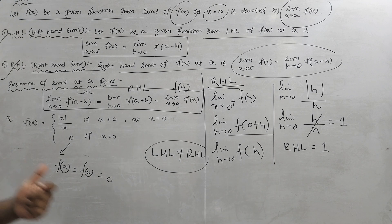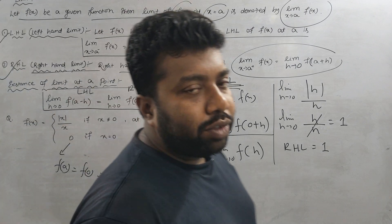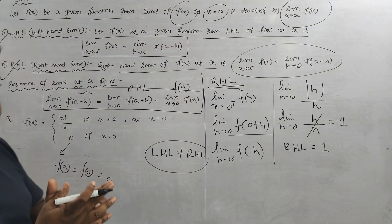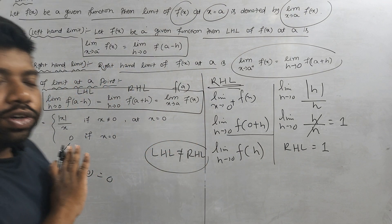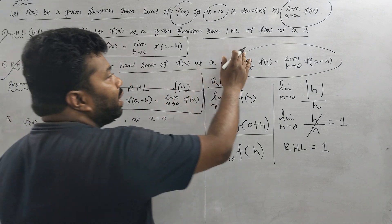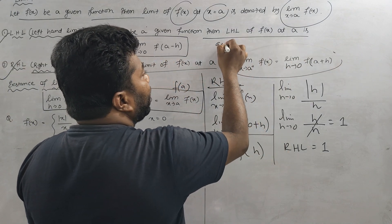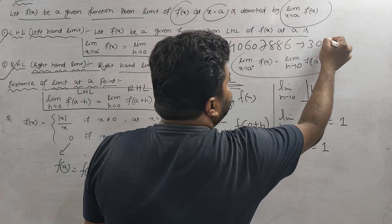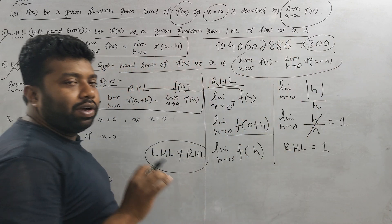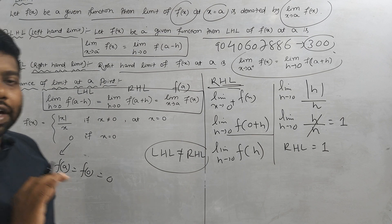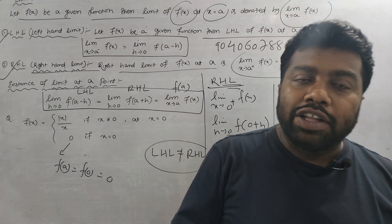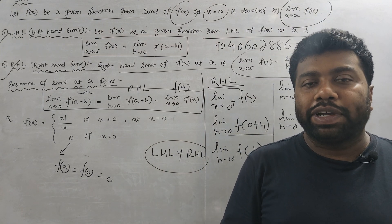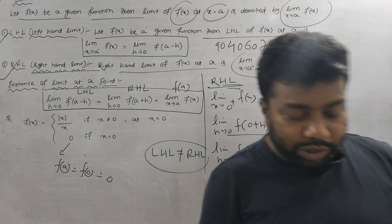That means the limit of the function at x equal to a — that is very simple and easy. Contact this number 9040607886. Only 300 rupees for all classes. This paper will be 300 rupees for classes — no tuition or coaching needed. You can have videos, notes, selection, and hosting. I hope you all enjoyed it. Thank you for watching, students.